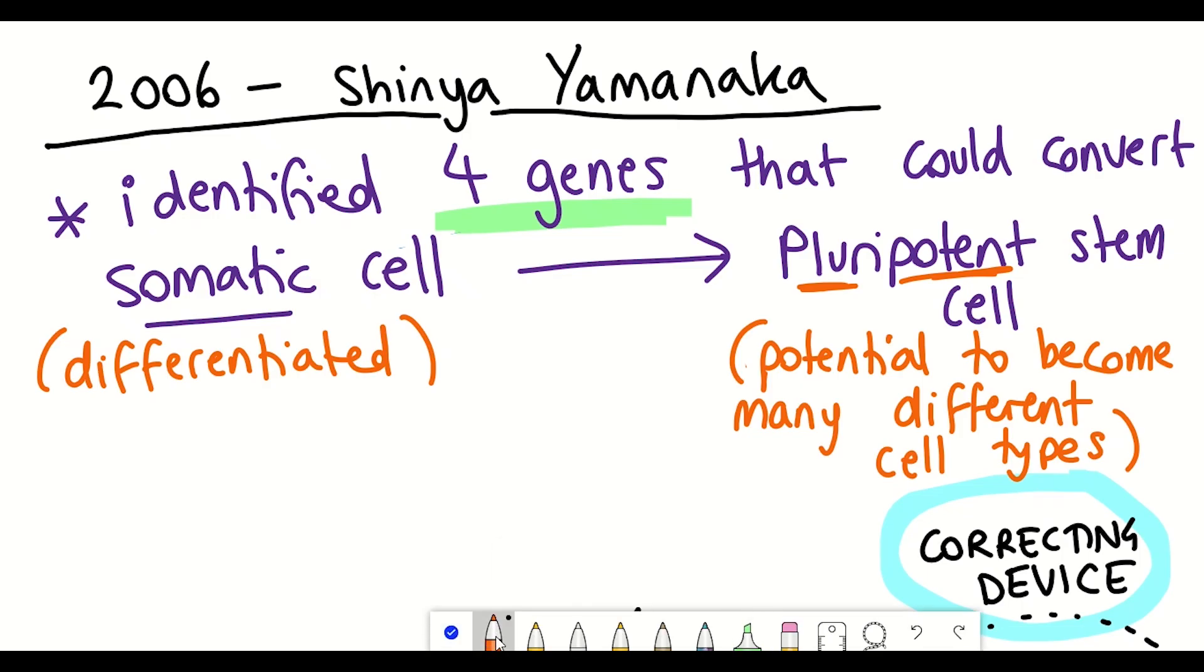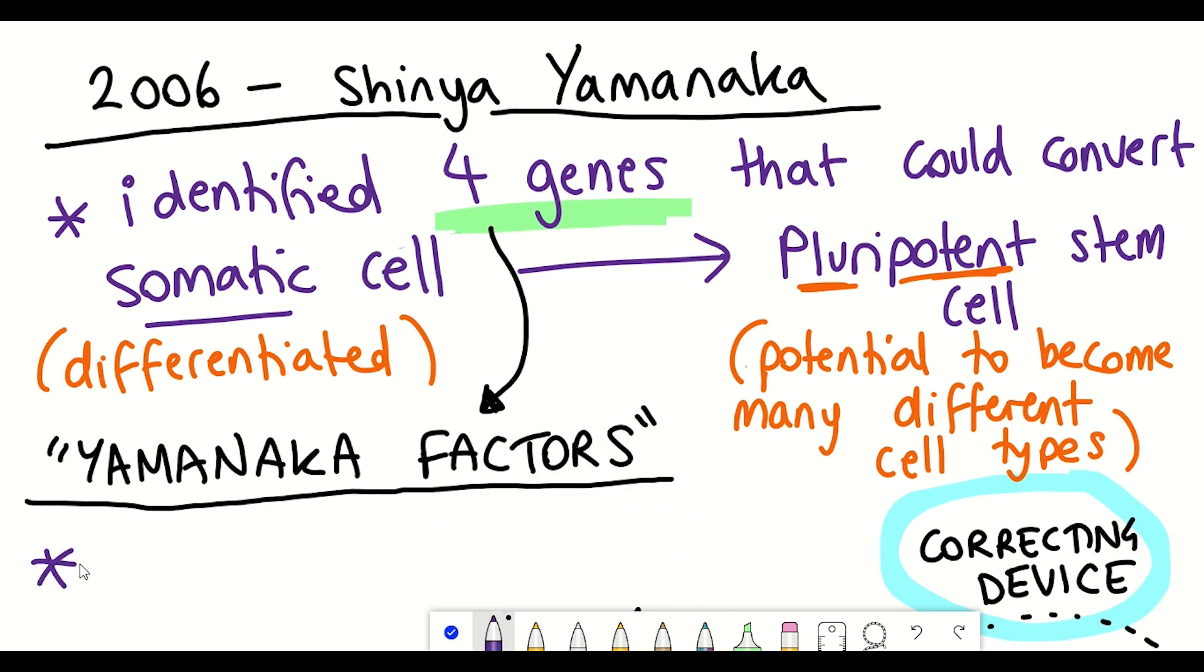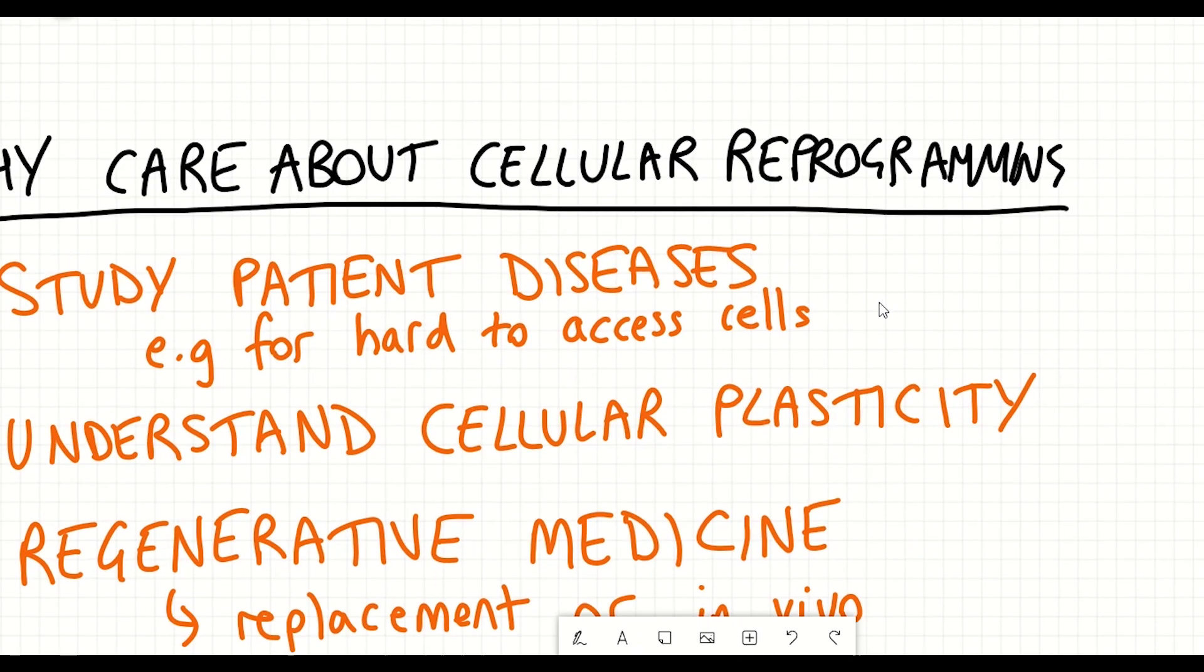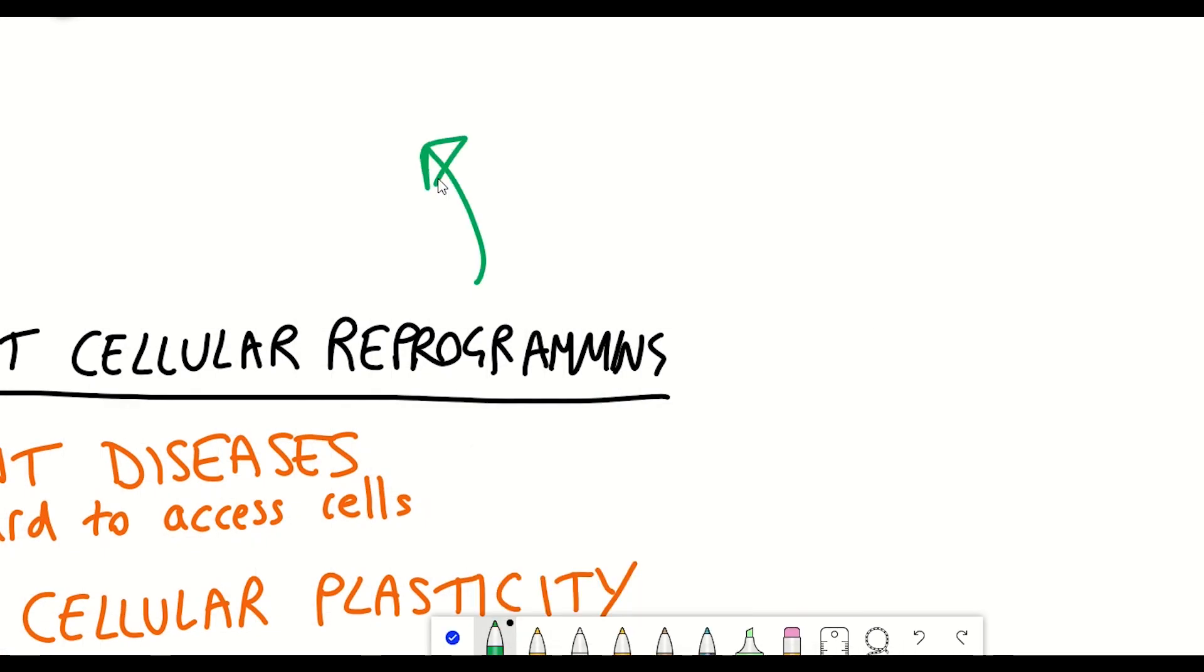And so typically the generation of these pluripotent stem cells is achieved by expressing the so-called Yamanaka factors that are transcripts that can alter the cell state and convert that cell back to its de-differentiated form. However, as with most things in medicine, there are two key priorities. One, that it's safe, and second, that it's efficient and effective as well.